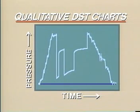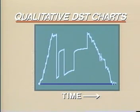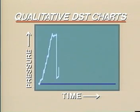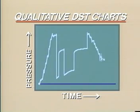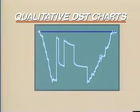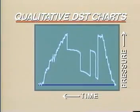Here we see a pressure-time plot for a typical DST chart. Note that pressure on the vertical scale increases upward, and time on the horizontal scale increases from left to right. Based on the convention of an individual service company or the design of a particular manufacturer's pressure recorder, the pressure scale or the time scale may be reversed. The manner of recording should not affect the final results, but we have to know which is which.